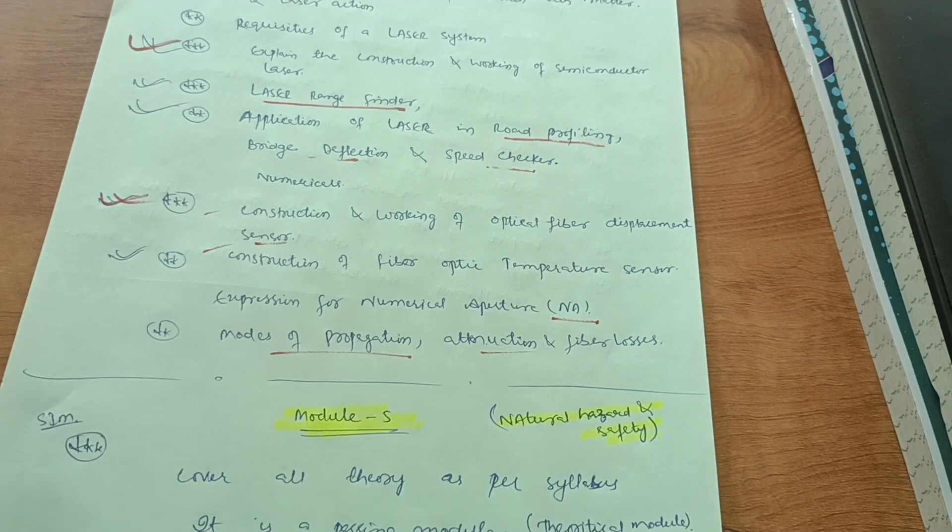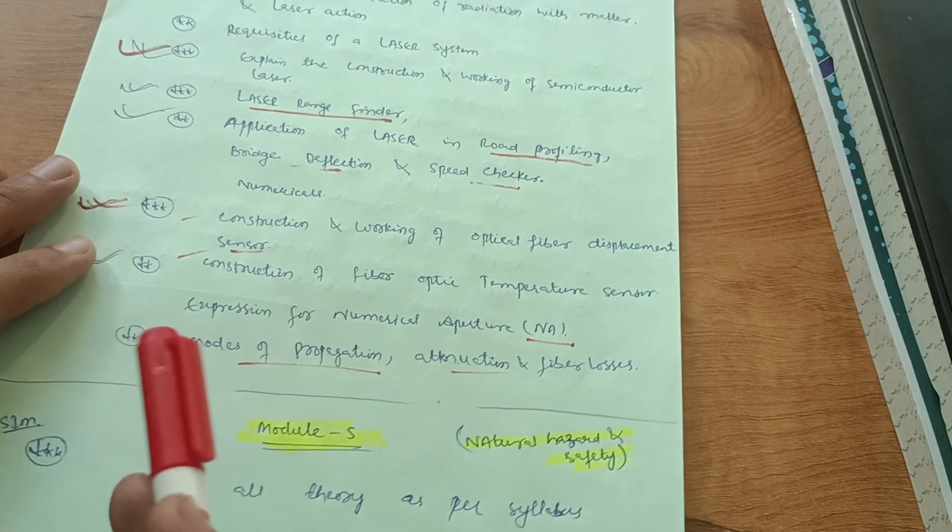You can easily score 70 to 80 marks if you just cover this much portion, even more than 80 if luck matters, which plays a big role, a major role in the VTU examination. You may already come across this. Thanks for watching my video.